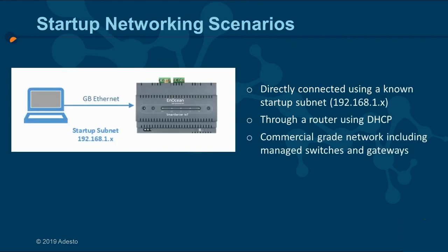Out of the box, all of these scenarios work for the Smart Server IoT. You could connect directly through an Ethernet cable and configure your PC to be on a known subnet 192.168.1, provided it does not conflict with the Smart Server's 192.168.1.222 address.